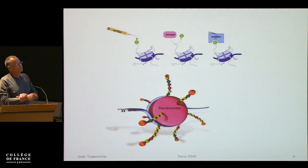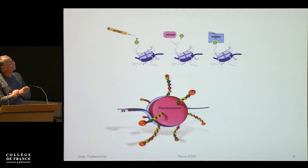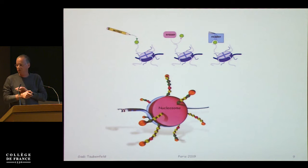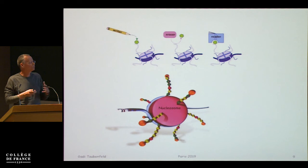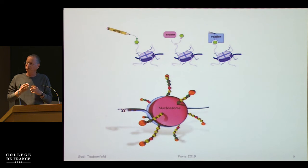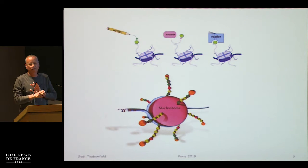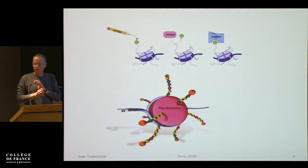From now on I'll call those proteins 'processes.' There are three types: writers, erasers, and readers. Writers are the proteins that leave marks on the histone tails. Erasers can come and erase those marks. Readers just observe what is going on — they are the executors, and from our point of view they are not the focus. Note that writers, erasers, and readers are actually the terminology used by biologists, not something invented here.